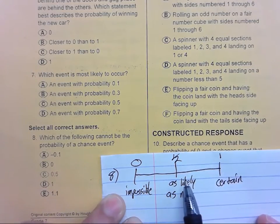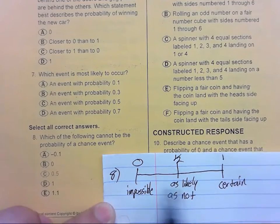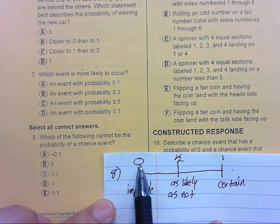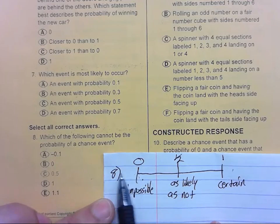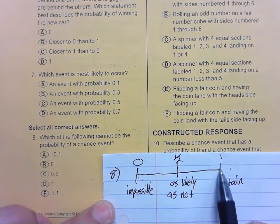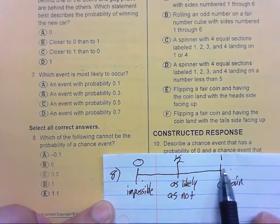So our probability can really only be between 0 and 1 because 0 is impossible. We can't have anything less than impossible. And if it's certain, if it's going to happen, we can't have a higher probability than that.